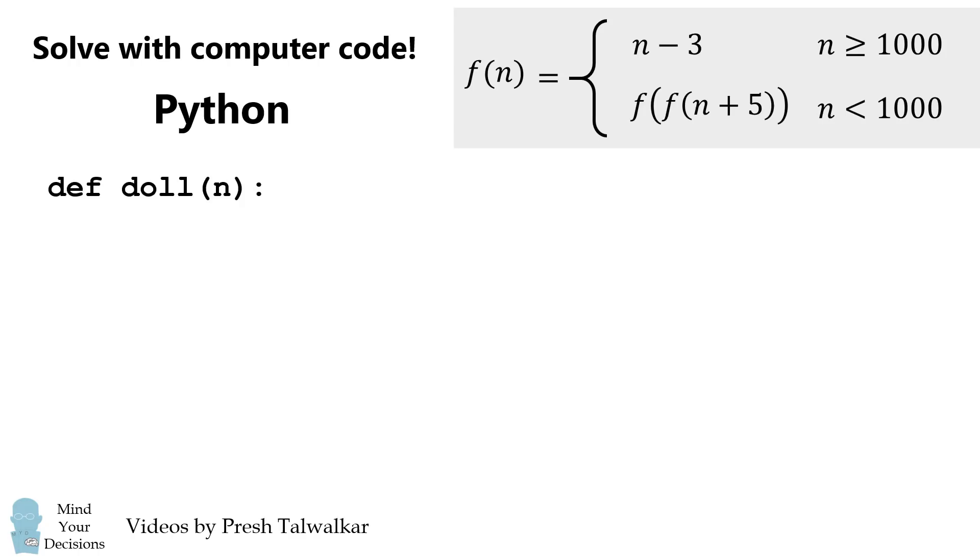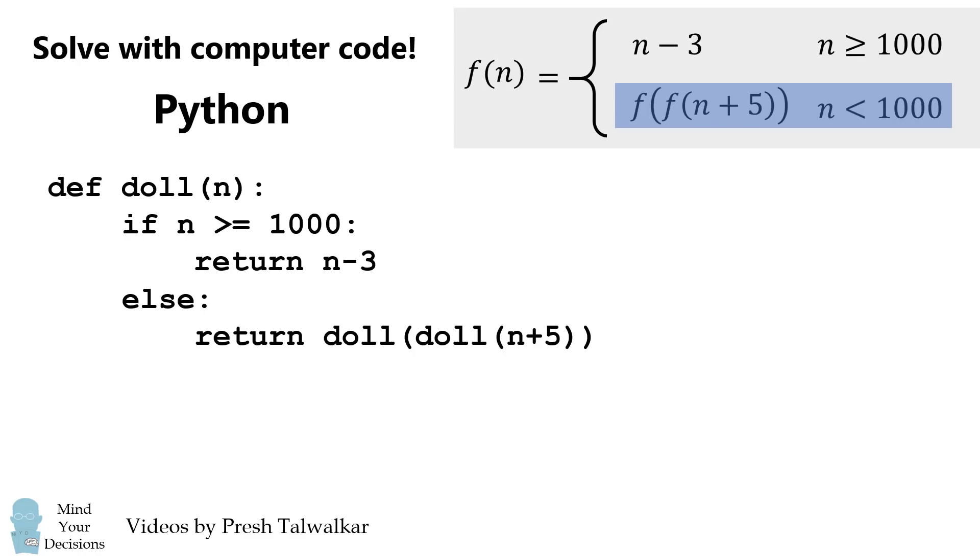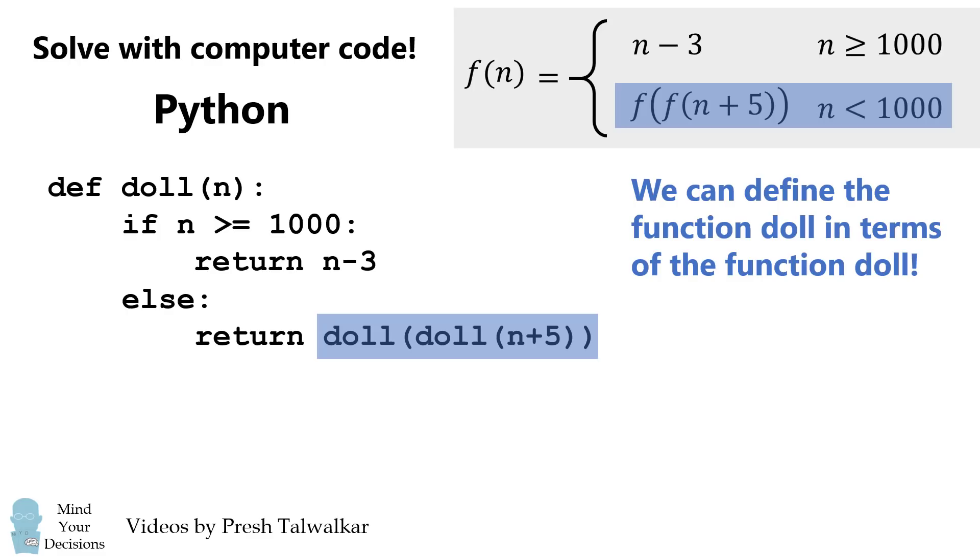So we want to define a function doll. If n is greater than or equal to 1000, we want to get the value of n minus 3. Otherwise, we want to get the value of f of f of n plus 5. This will be written as return doll of doll of n plus 5. And this is something pretty interesting. We're defining the function doll in terms of the function doll. This is an example of recursion, and we'll use it to solve this problem.